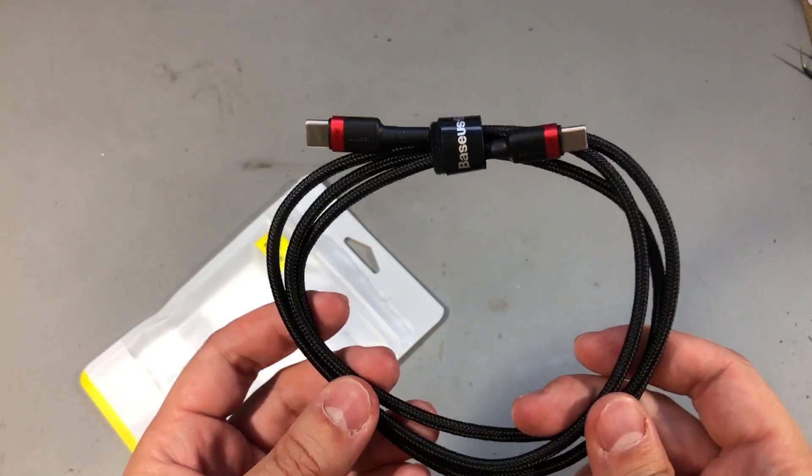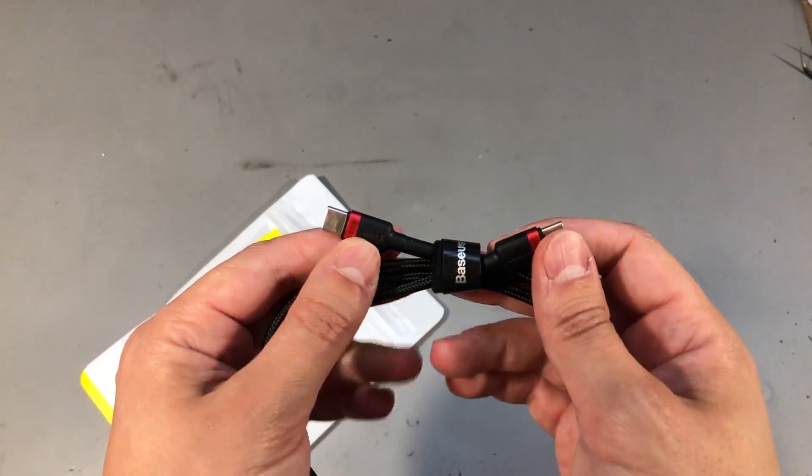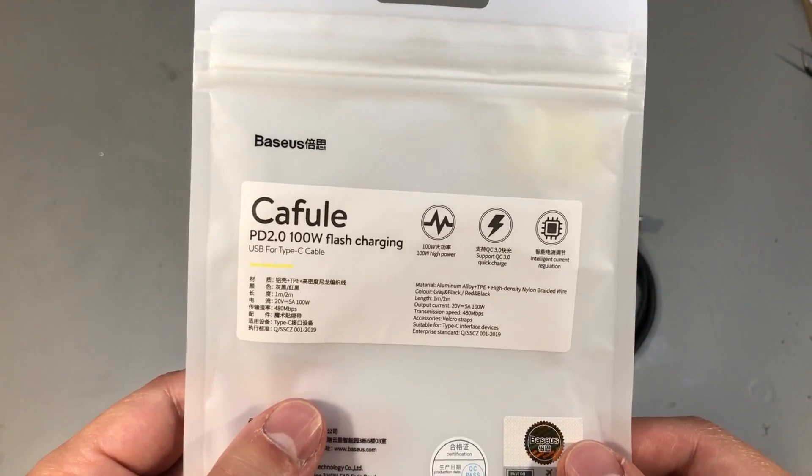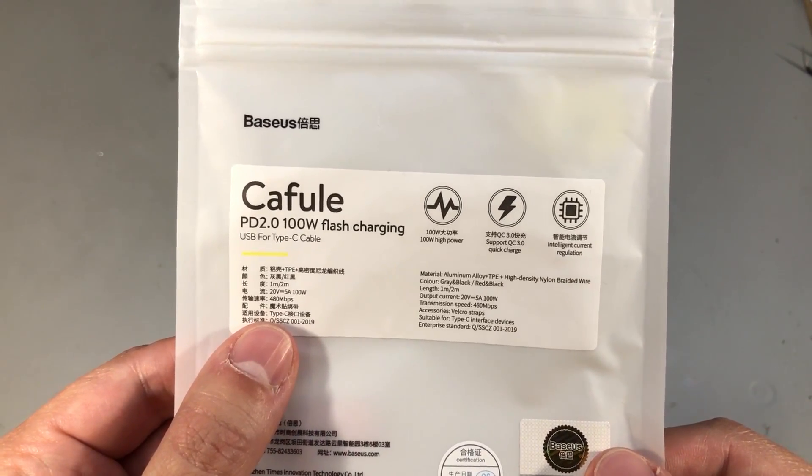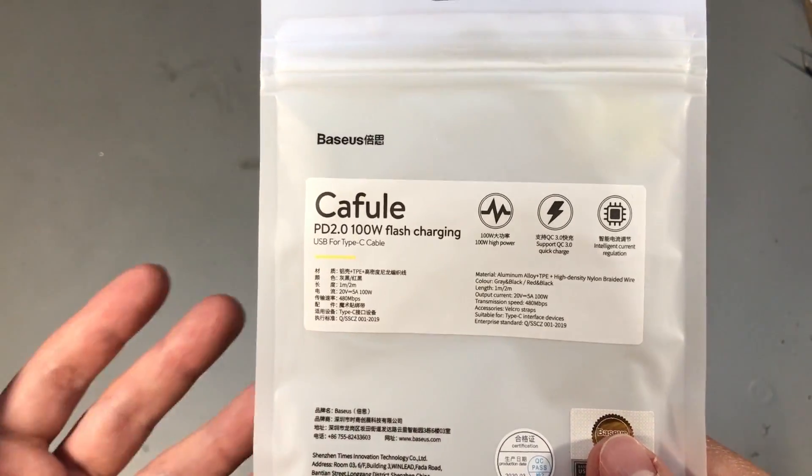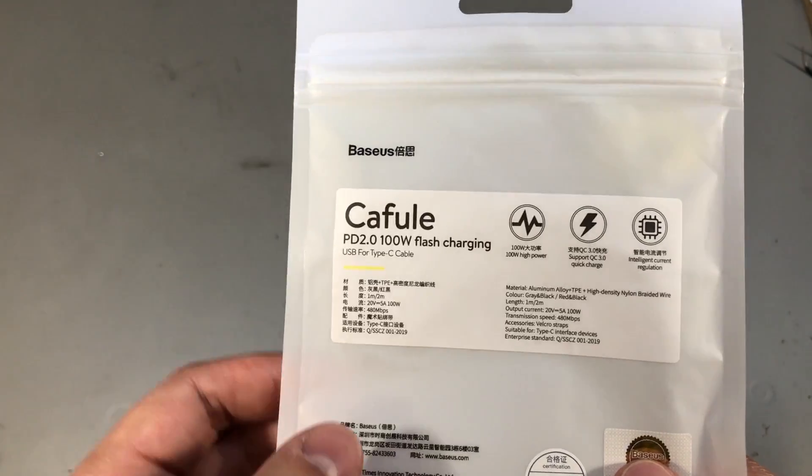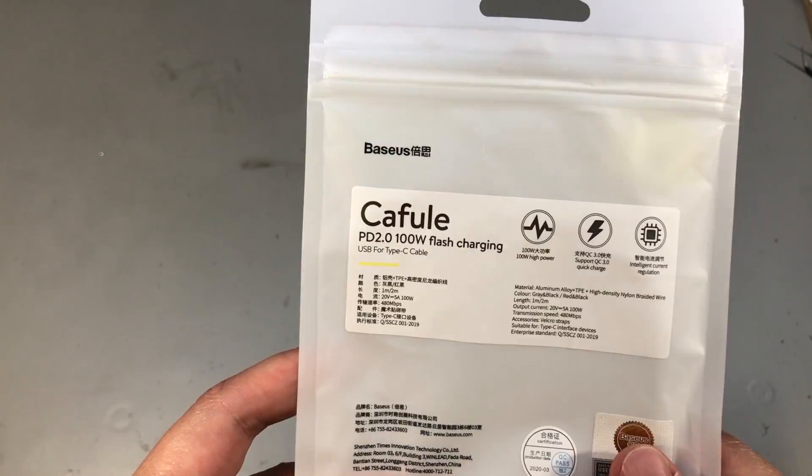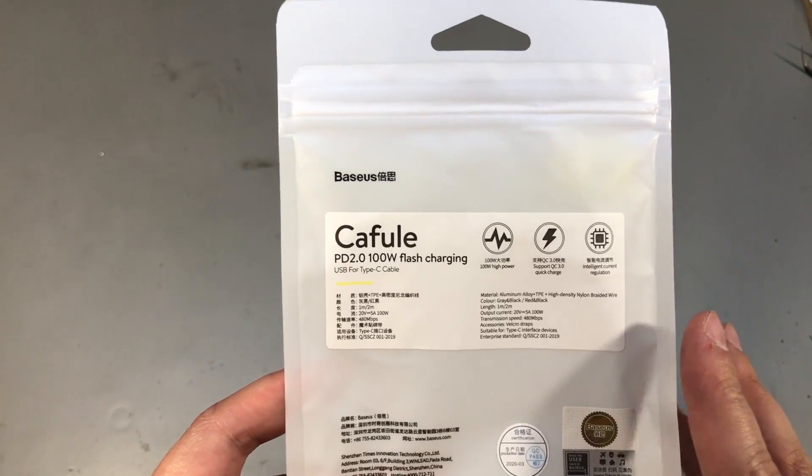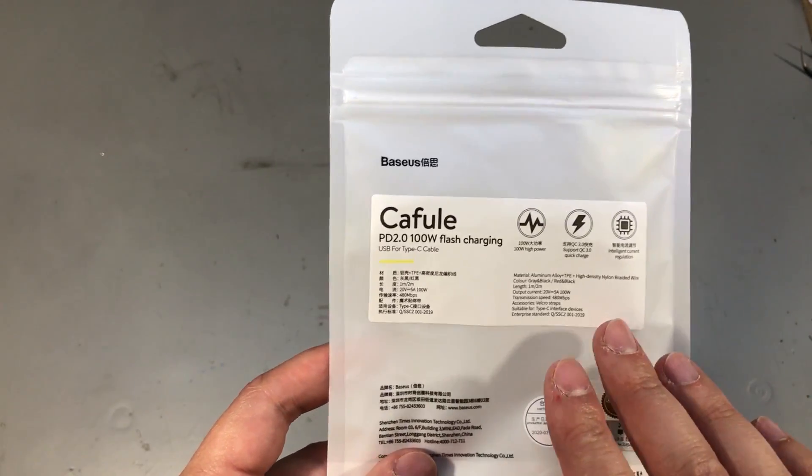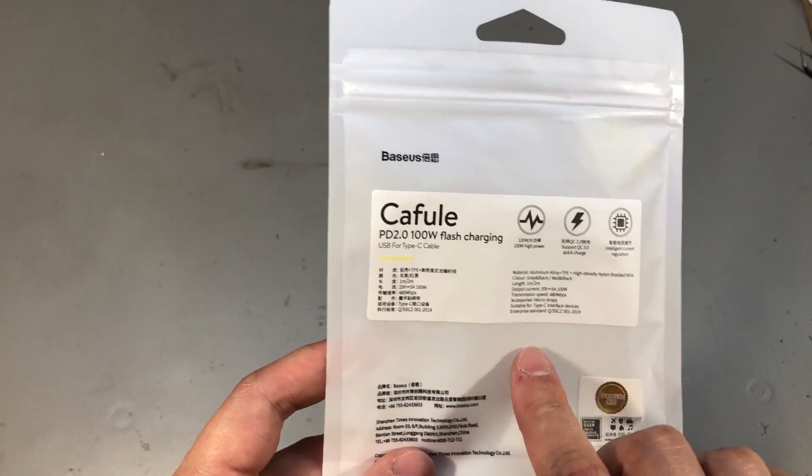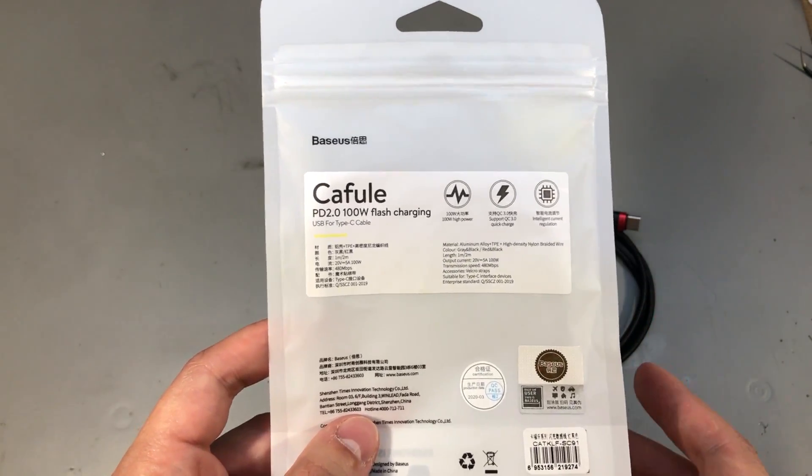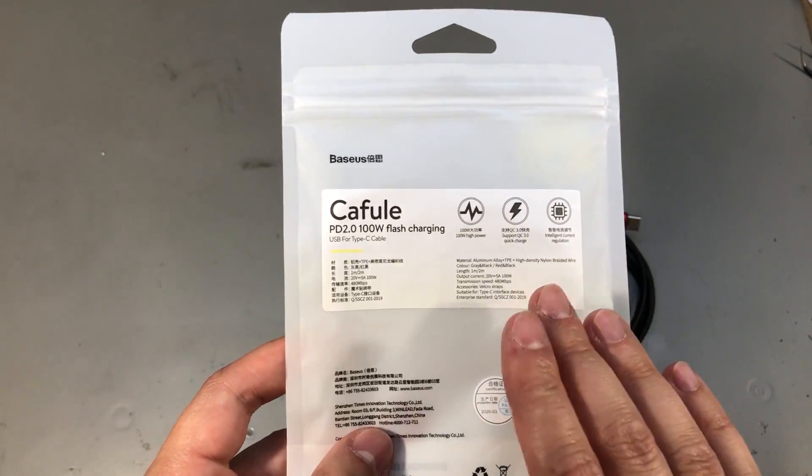And since we're talking about cables I also ordered another usb type c cable from Baseus. This one though is rated for 100 watts because with usb type c and power delivery not all cables are created equally with the most common ones only being rated for 65 watts. This one however is rated for 100 watts and I believe it has the associated chip to signal that. There is a lot to talk about power delivery and ratings of these cables but I'm not an expert on that subject and all I know is that there are some chargers out there that will put out 100 watts without checking that the cable has the chip to signal that and it's been rated for 100 watts and that can lead to problems.